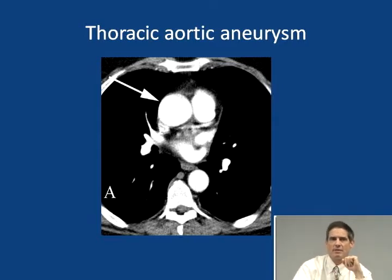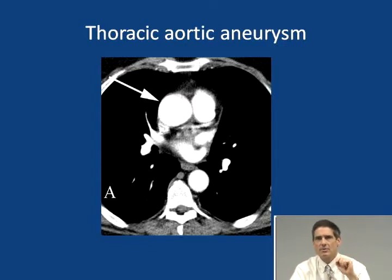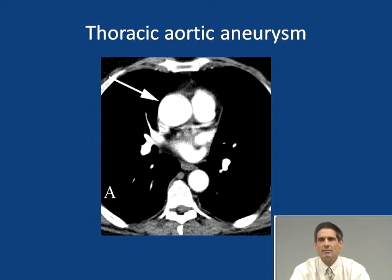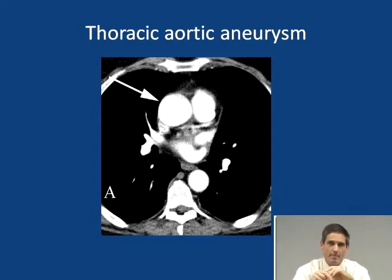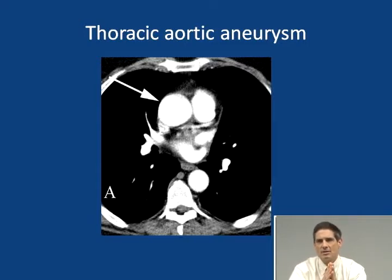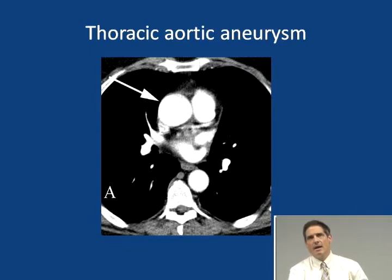Moving down: thoracic aortic aneurysm. Patients with a symptomatic thoracic aortic aneurysm are generally direly ill because they've ruptured or dissected the aneurysm, presenting to the emergency room with severe chest pain. They'll typically undergo emergency chest CT to figure out whether they've got a thoracic aortic dissection, pulmonary embolism, or myocardial infarction. The dissection usually requires emergent, hopefully life-saving intervention — it's a tough disease to treat when you rupture or dissect a thoracic aneurysm.